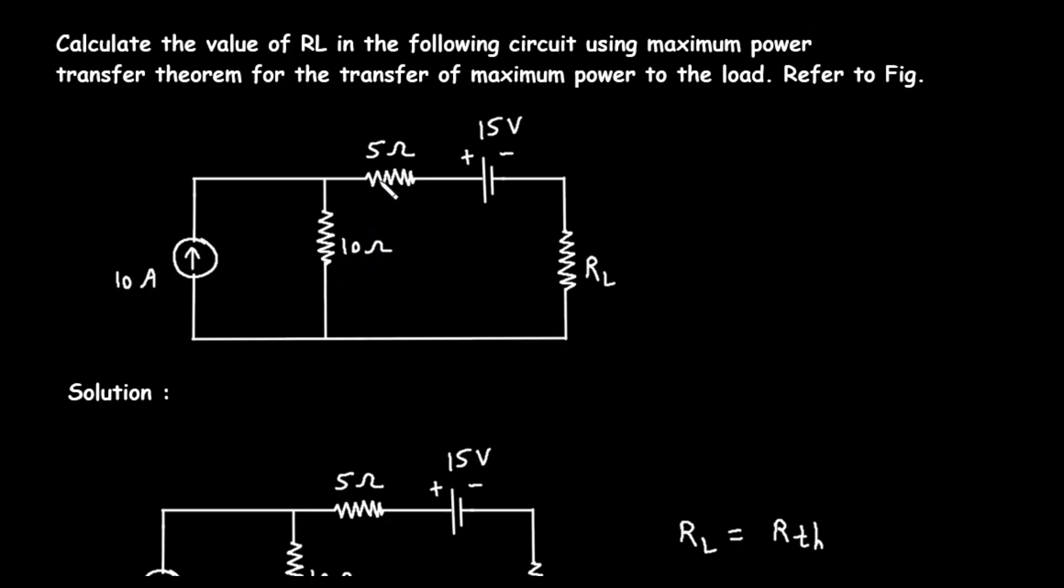Moving to the right side of the circuit, we have another branch. This branch contains a 5 ohm resistor connected in series with a 15 volt DC voltage source. The polarity of the voltage source is marked with a plus sign on the left and a minus sign on the right. Finally, also in this branch, we have our load resistor, which is labeled R sub L.